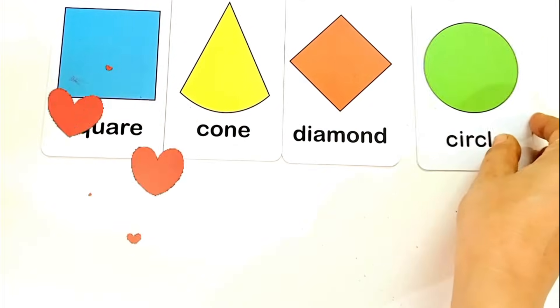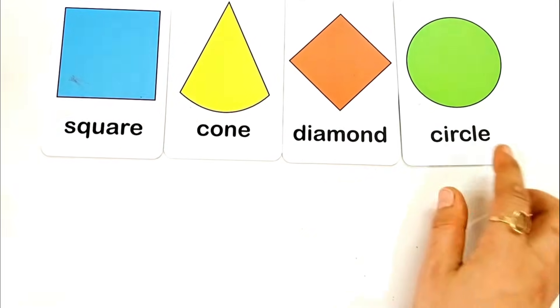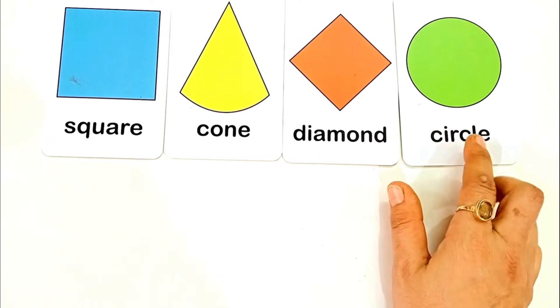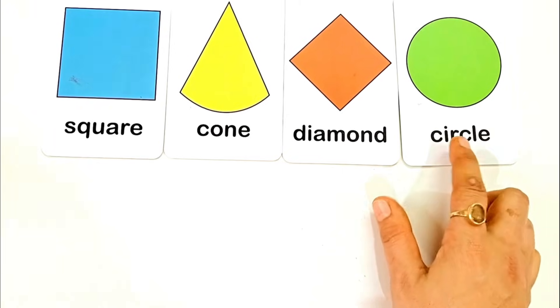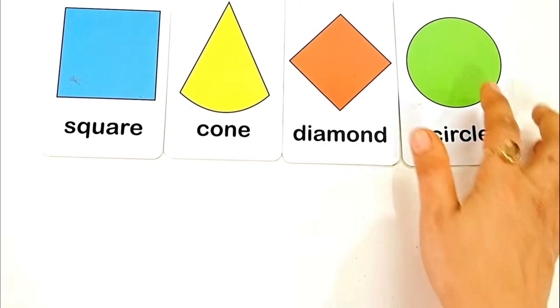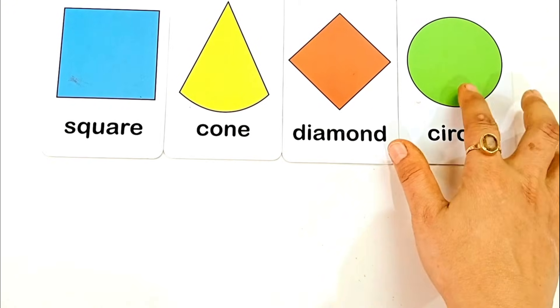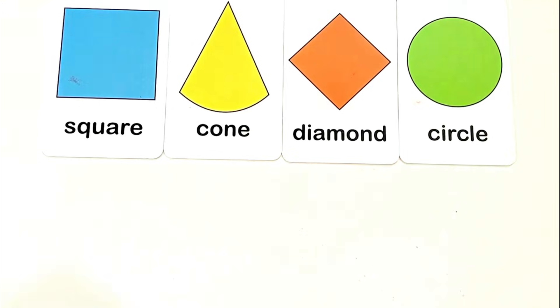C for circle. C I R C L E, circle. This is circle shape, and the color is green color.